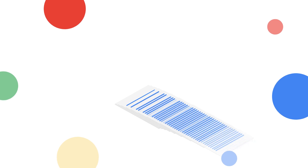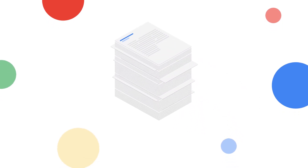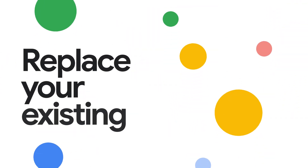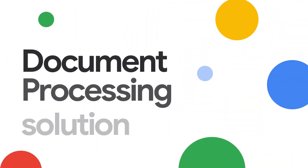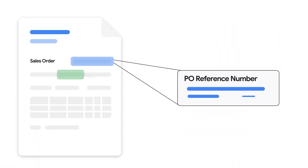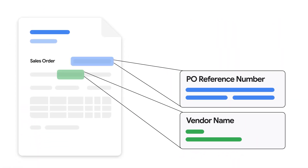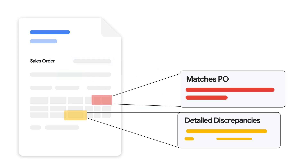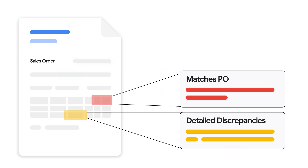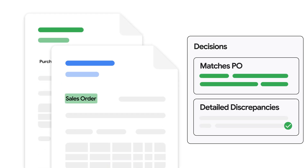Do you have a large amount of unstructured data to process? Replace your existing document processing solution with one that extracts data and, after reasoning, suggests next best actions. Base64 is an explainable AI solution that quickly turns unstructured documents into decisions.